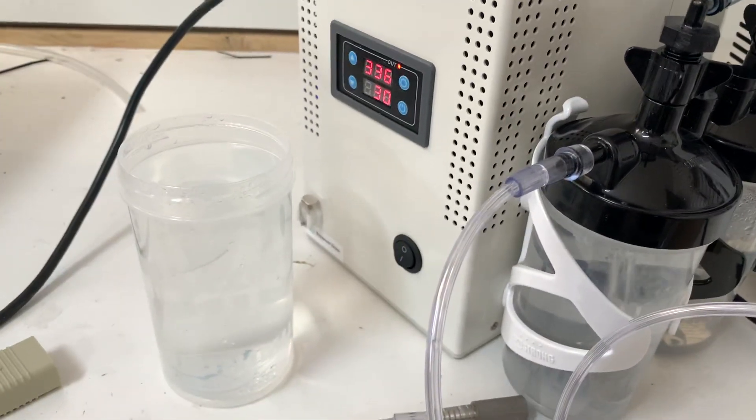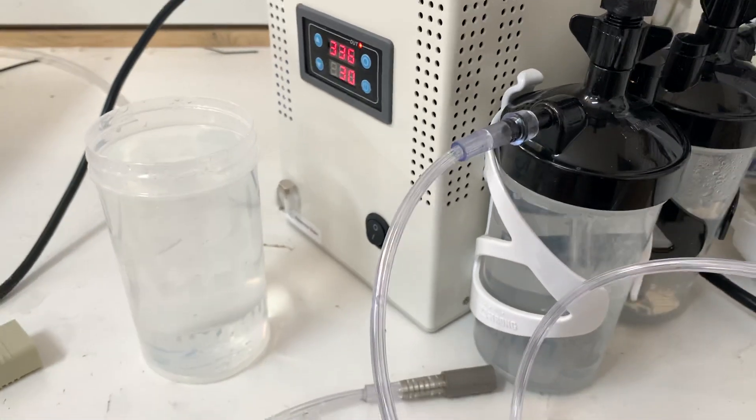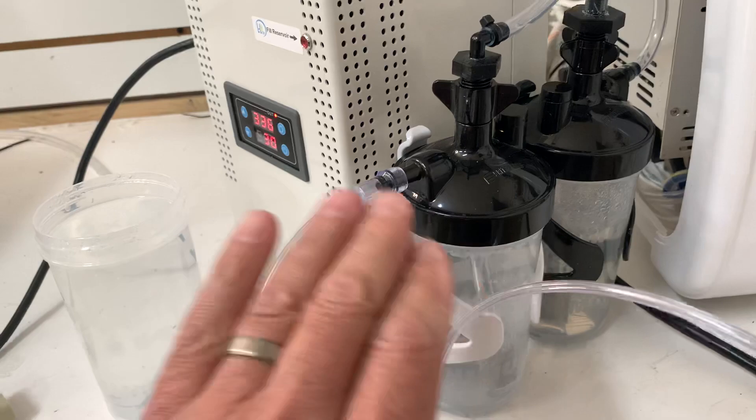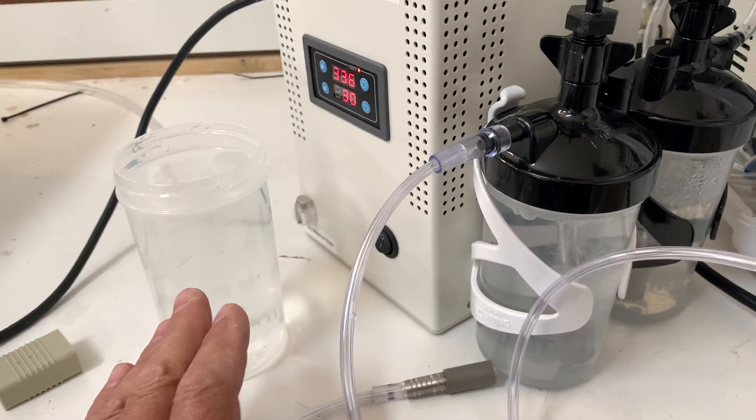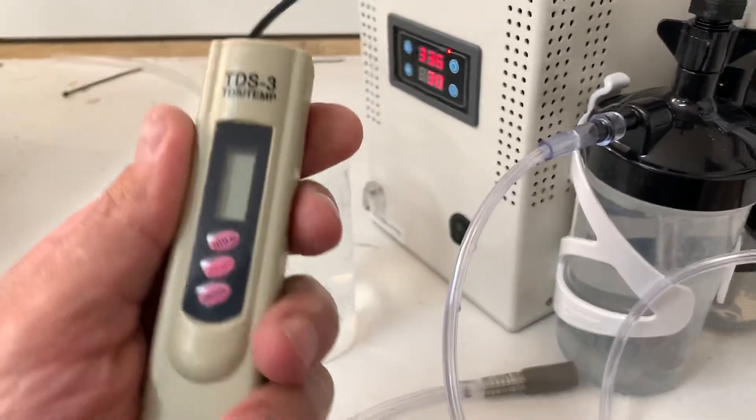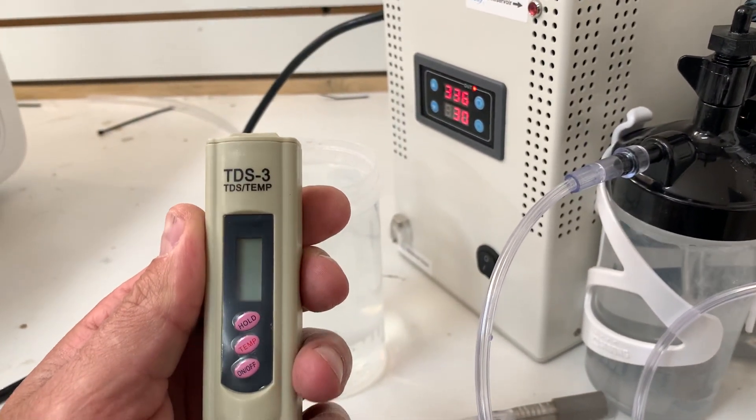Okay, this is a short demonstration to test to see if you're getting lye out of your machine and into your drinking water. What we're going to use for this test is a TDS meter, this is a dissolved solid meter.